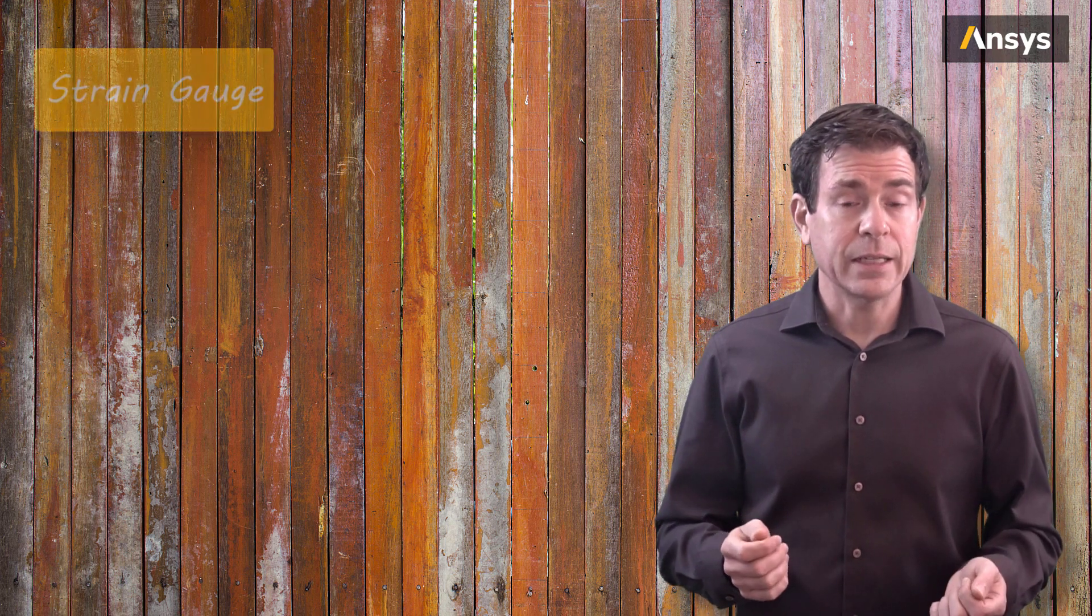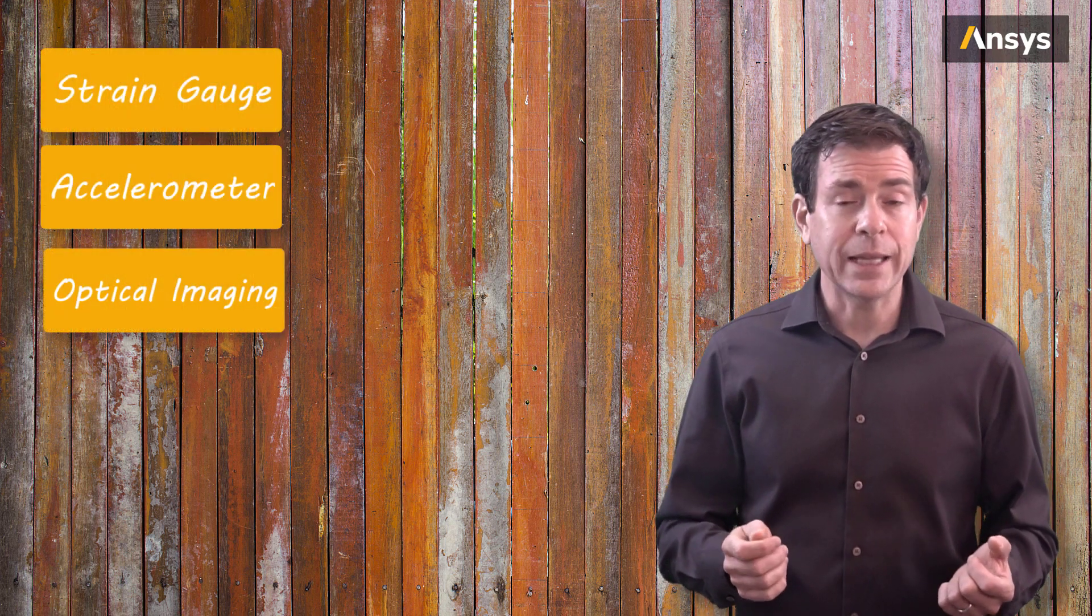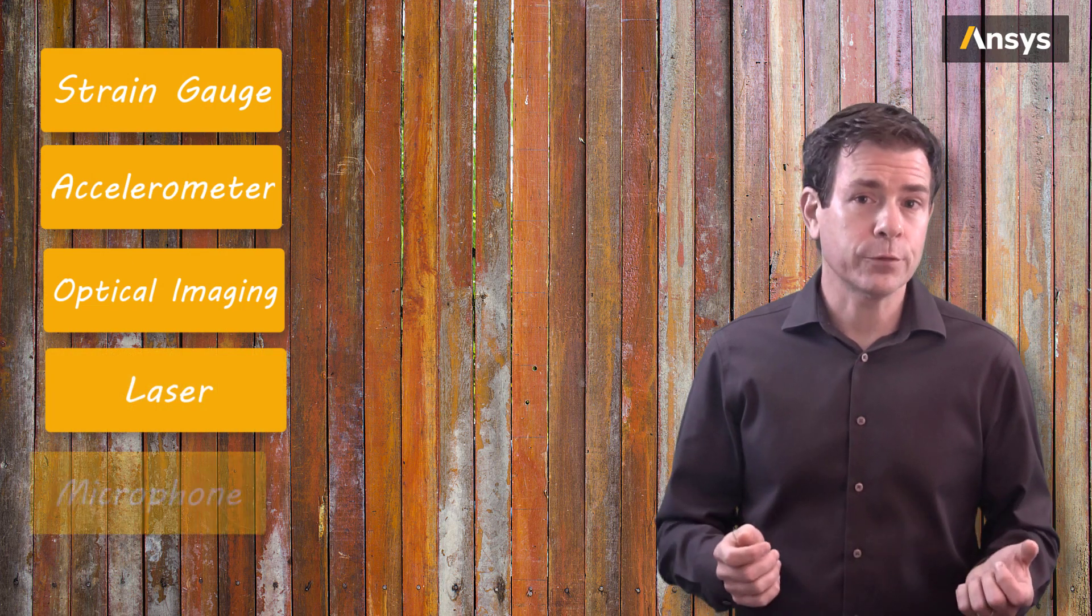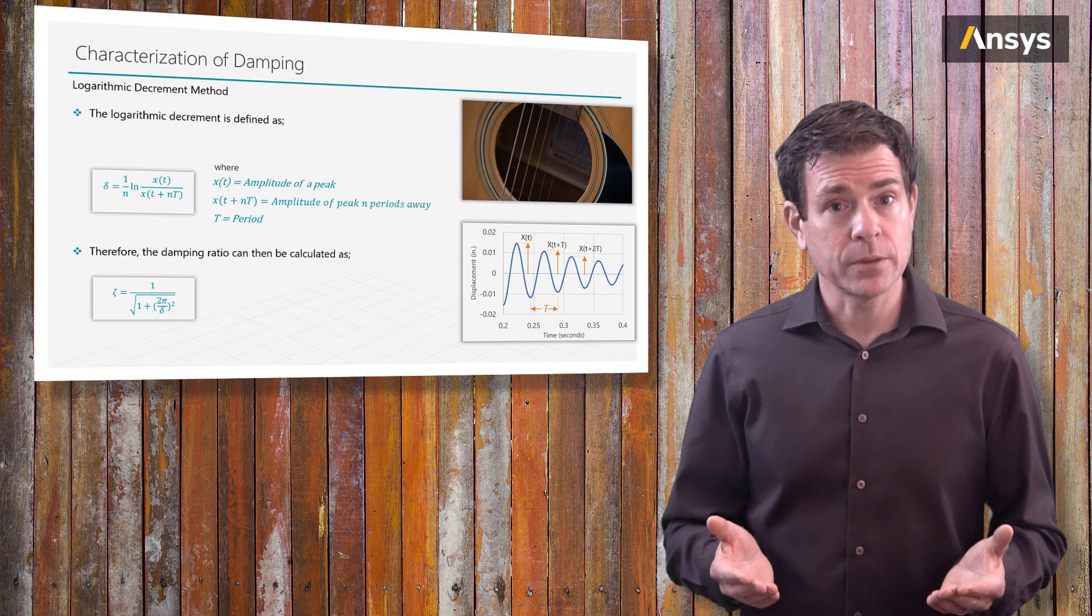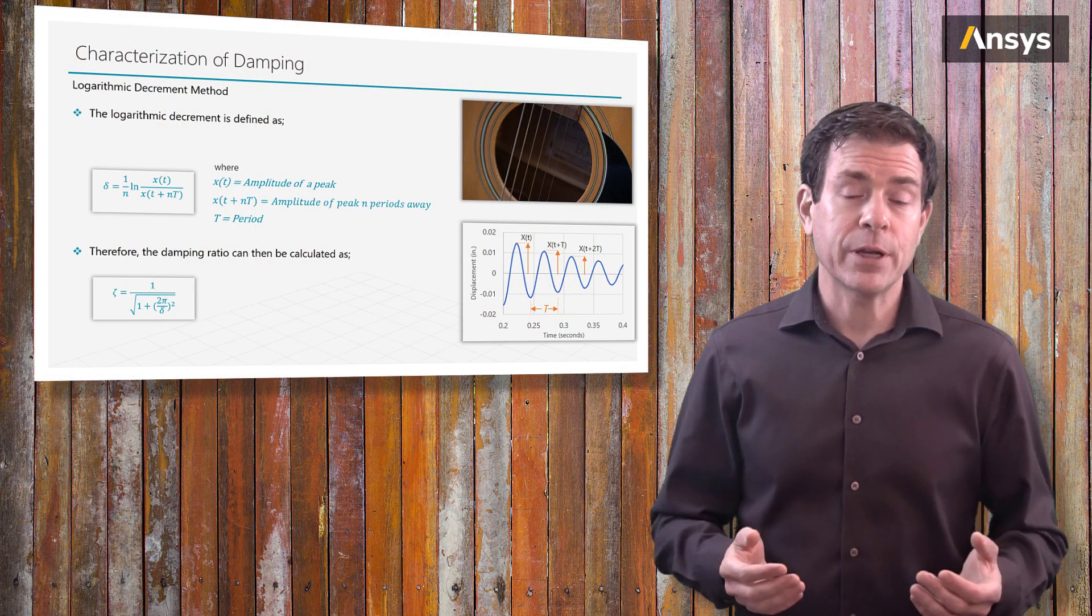So what is required is some measurement of the amplitude of the structure. There are various measurement methods such as a strain gauge, an accelerometer, optical imaging, laser measurement, or even a microphone. Once we have a graph of a portion of the vibration of the decay of the displacement, we can compute the damping ratio from this.